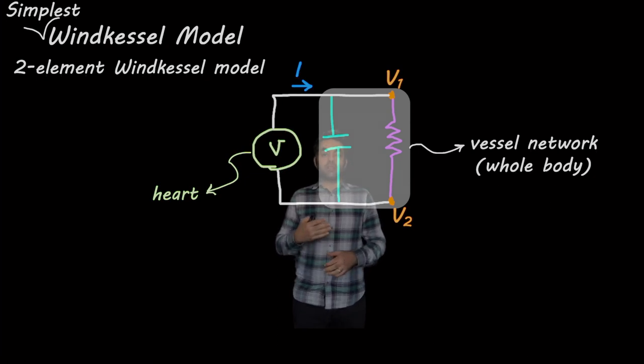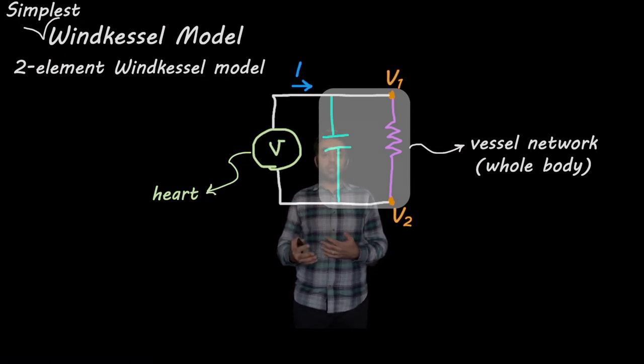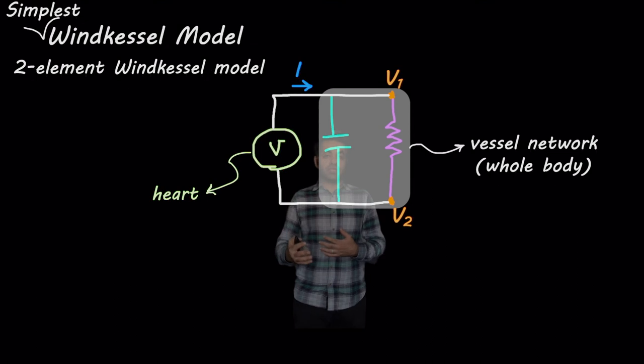And also there are different ways to simulate the behavior of blood flow inside our vessel network using multiple Windkessel models. For example, one Windkessel model for every organ that we have in our body, the vessels that we have, for example, in liver or in kidney or in our head. And therefore, there are more complex Windkessel models to work with.